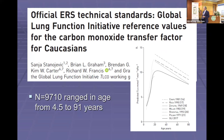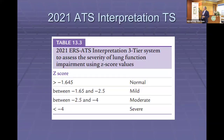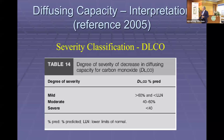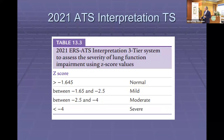As far as interpretation and grading: in 2005, the degree of abnormality was based on percentages. To be consistent with the 2021 interpretation scheme, the new grading is based on Z-scores — still three levels: mild, moderate, and severe, plus normal. Z-scores will be discussed this afternoon as well.